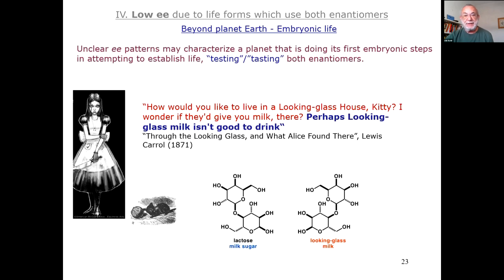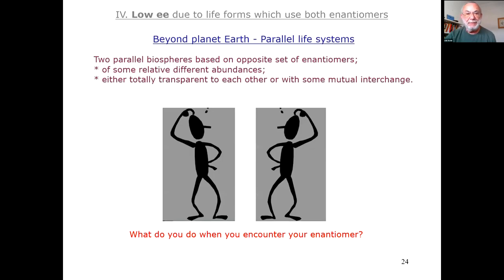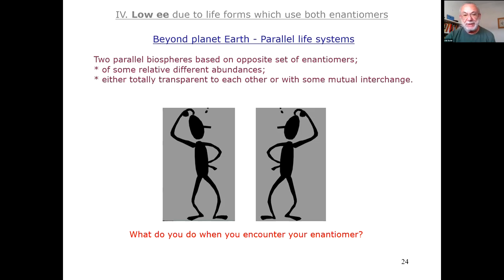Testing both enantiomers — testing and tasting are very similar. We immediately recall the problem of Alice, distinguishing between milk sugar and looking-glass milk sugar. That is exactly the problem of embryonic life: to decide whether to go in this direction or that direction, and the EE situation is vague. Also, and this is somewhat speculative, we could have parallel life systems — two parallel biospheres based on opposite sets of enantiomers, either totally transparent to each other or with some mutual interchange.